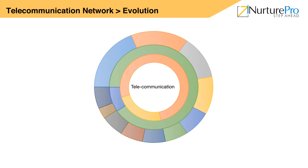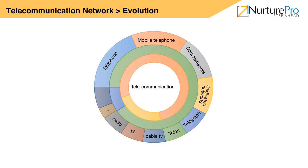Now let us see how telecommunication has evolved. Telephone, mobile phone, data networks, dedicated networks, telegraph, telex, cable TV, TV, radio, press, and post are types of telecommunication, in which press, TV and cable TV are unidirectional mass communication systems and the rest are bi-directional communication systems.